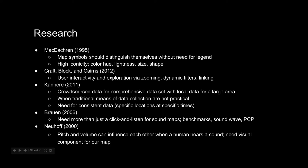To make our application more effective, we have conducted research on the current literature. McEachran, for example, describes how map symbols should distinguish themselves without the need for a legend. This is important for allowing users to simply and easily understand a map. This can be achieved through high iconicity symbols that are distinguished based on their color hue, lightness, size, and shape.